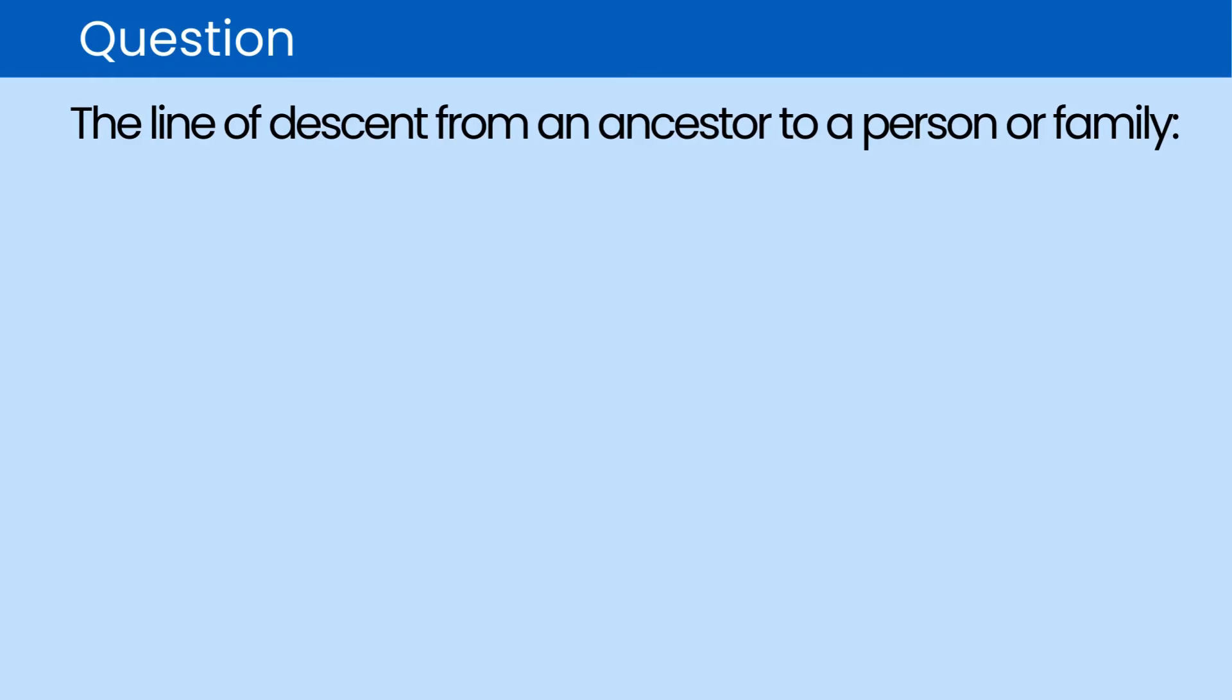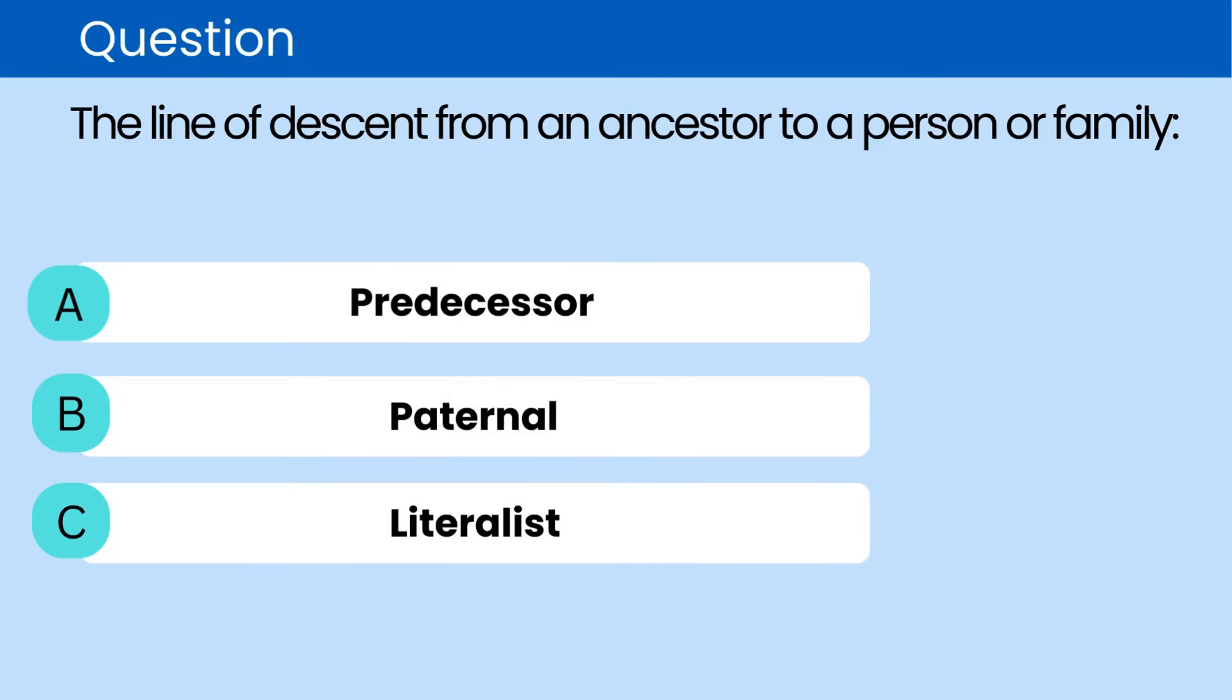Question: The line of descent from an ancestor to a person or family. A. Predecessor. B. Paternal. C. Literalist. D. Lineage. The correct answer is D. Lineage.